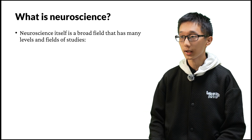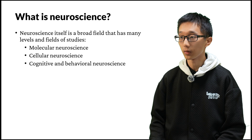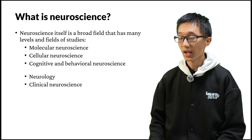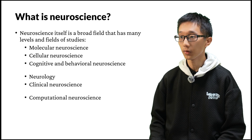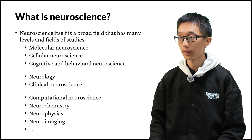From the microscopic to macroscopic levels, we have molecular neuroscience, cellular neuroscience, and cognitive and behavioral neuroscience. From the aspect of diseases and disorders, we have neurology and clinical neuroscience. From the aspect of methods of research, we have computational neuroscience, neurochemistry, neurophysics, neuroimaging, and much more.